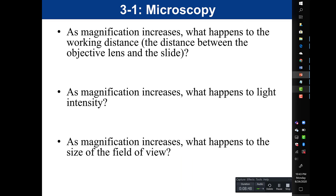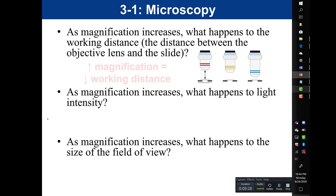As magnification increases, what happens to the working distance — the distance between the lens and the slide? As we go up in magnification, our lens gets larger because a bigger lens is needed to magnify more. A bigger lens means the distance between the slide and the lens becomes very small. So as magnification goes up, working distance goes down, which is why we only use the fine focus at higher magnifications.